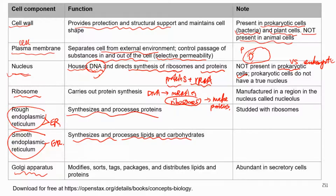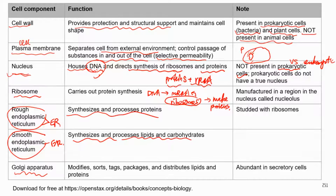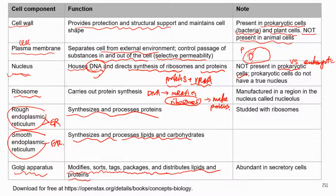The next structure is the Golgi apparatus, which is a very important structure. It participates in the process of making lipids and proteins, but it does not directly synthesize them. Instead, it is involved in later processing — as lipid and protein molecules go through the Golgi apparatus, these molecules will be modified, sorted, tagged, and packaged further.